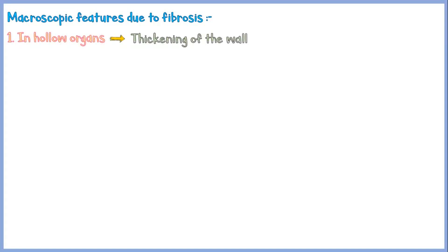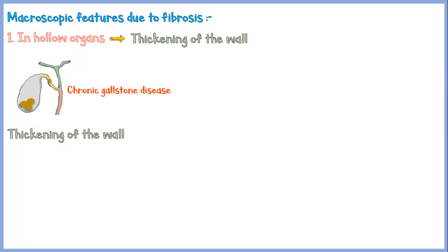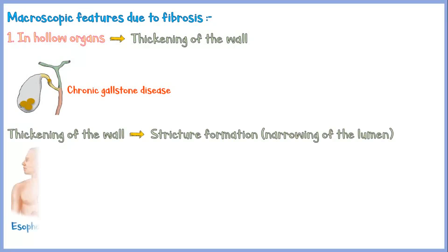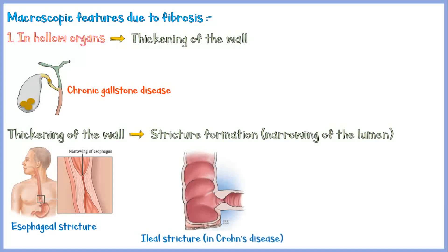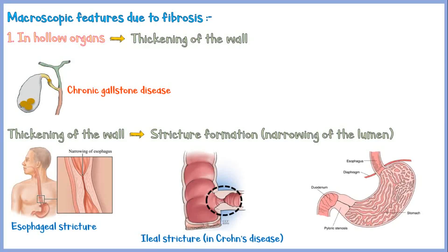Now let's see the morphological features of chronic inflammation due to fibrosis. If the inflammatory process involves a hollow organ, its wall may become thickened due to fibrosis, such as in chronic gallstone disease. If the involved organ is a narrow tube, wall-thickening may cause narrowing of the lumen, called a stricture — such as esophageal stricture, ileal stricture in Crohn's disease, and pyloric stenosis. It is important to note that strictures are also formed by malignant tumors, especially if the tumor has a dense fibrous stroma.